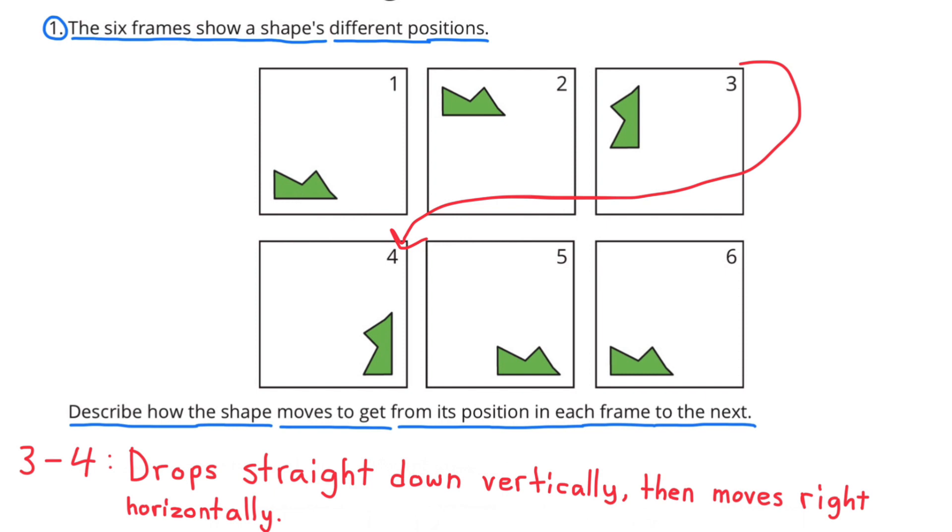Moving from frame 3 to frame 4, the shape drops straight down vertically, then moves right horizontally.